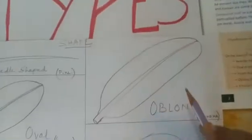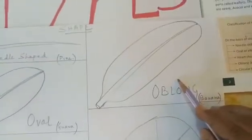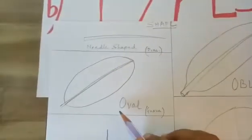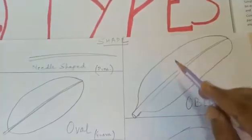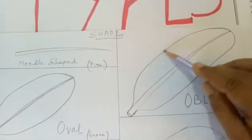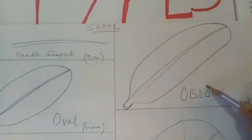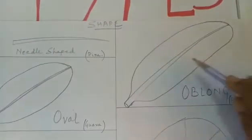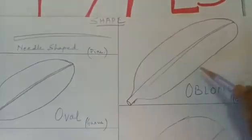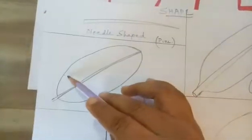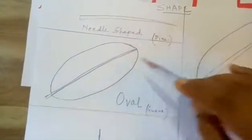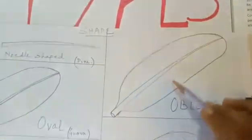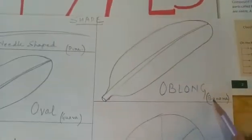Next one is oblong. See, oblong somewhat looks like oval. But there is one difference. What is the difference? The difference is the sides in the oblong shape are straight. These sides are straight, not curved. But here the sides are curved. Sides are curved. But here in oblong, the sides are straight. Example is banana.